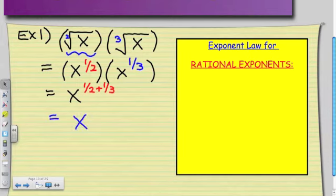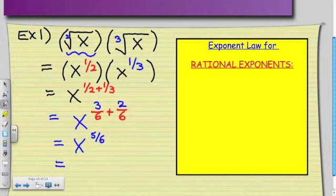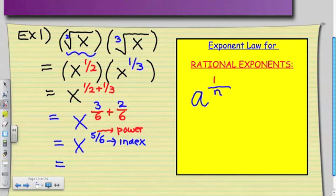But because my original question was in radical form, we have to convert this rational exponent. So remember, the numerator refers to the power, and the denominator refers to the index. So my formula is a to the power of m over n is going to be equal to radical a.